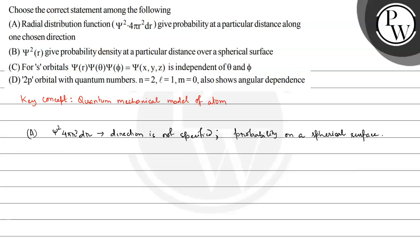When we talk about a spherical surface, there is no concept of any direction, because a spherical surface is the same from all directions. So option A is incorrect. Now option B says: chi-squared(r) gives probability density at a particular distance over a spherical surface. This is also incorrect because chi-squared(r) gives the probability at a particular distance, but not on a spherical surface.